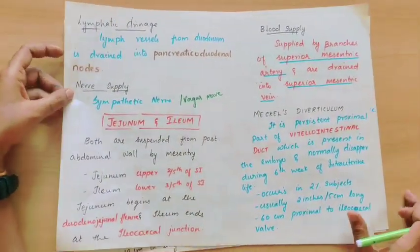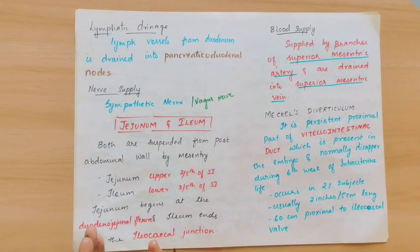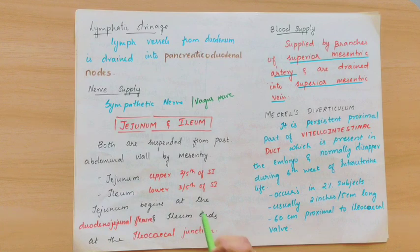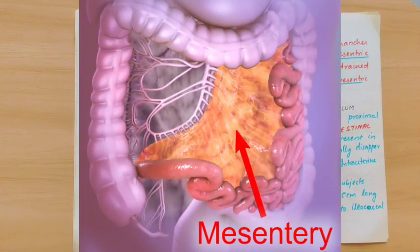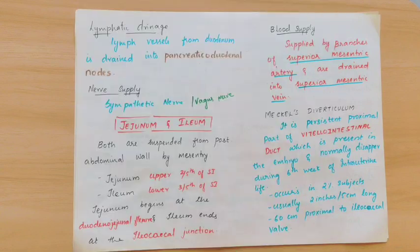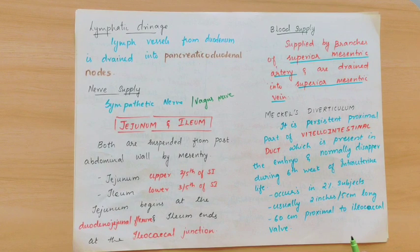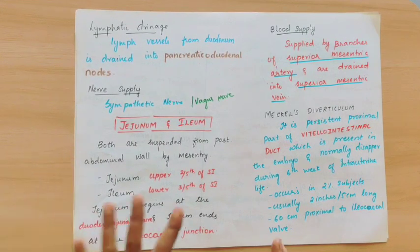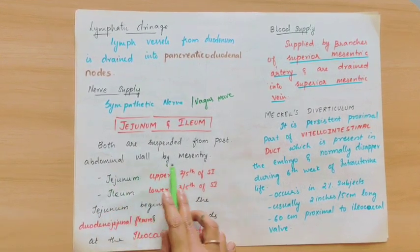Now we will move on to the jejunum and ileum. The small intestine is connected to the posterior abdominal wall by the mesentery. The mesentery is a peritoneal double fold. So in the small intestine, the connection to the posterior abdominal wall is the mesentery. Both gain suspension from the posterior abdominal wall by the mesentery.